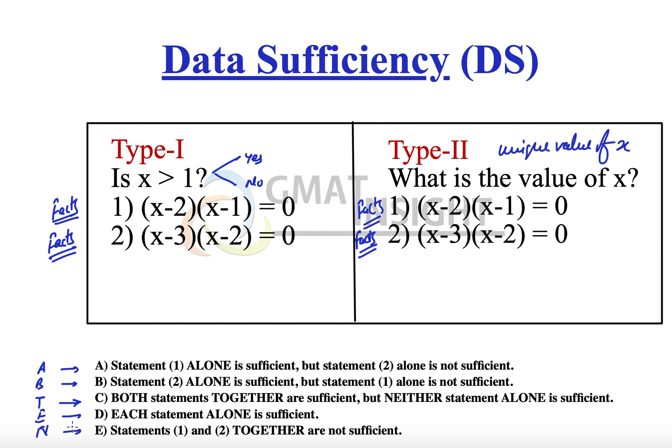This is the very first introductory understanding of data sufficiency. Going forward, I will discuss Type 1 questions by walking through five different questions whose answers will be A, B, C, D, and E respectively, so you understand in what situation each answer applies. There will be a detailed discussion about the types of questions in subsequent videos.